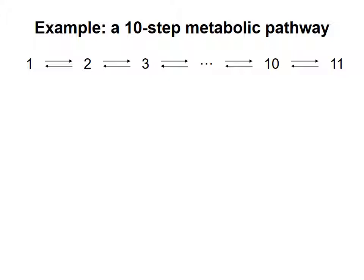As is true for an individual chemical reaction, for the metabolic pathway as a whole to proceed in the forward direction, the overall delta G for the pathway must be negative.